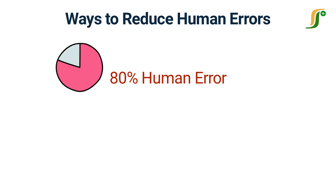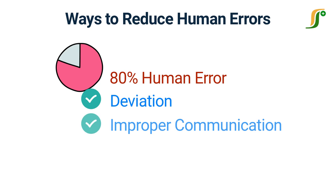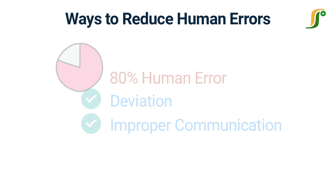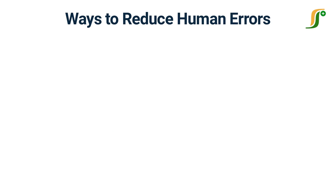Human errors are traced by the occurrence of deviations in the process. Most of the root causes of deviations are human errors due to improper communication or failure to follow the written procedure. Here are some solutions to minimize human errors.